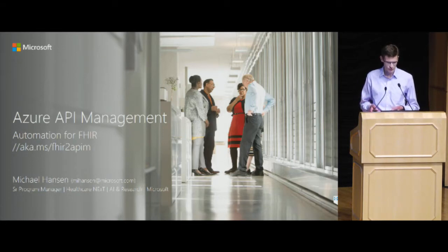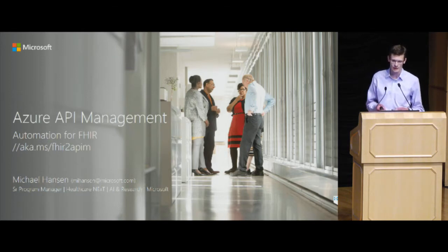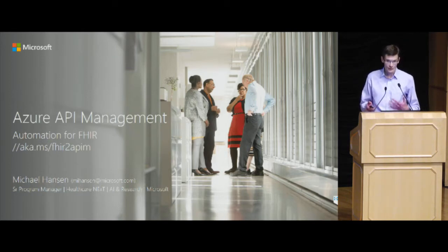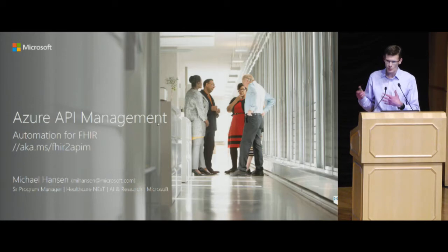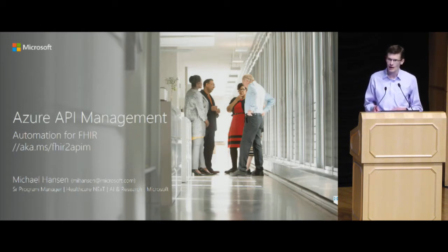Prior to that role, which is new to me, I was a cloud solution architect, and I spent quite a bit of time deploying various FHIR-related stuff into our cloud. So while the title of the talk here is about API management, it's really more generically about deploying FHIR-related stuff into the cloud, how you can automate that and use high-level services for that.